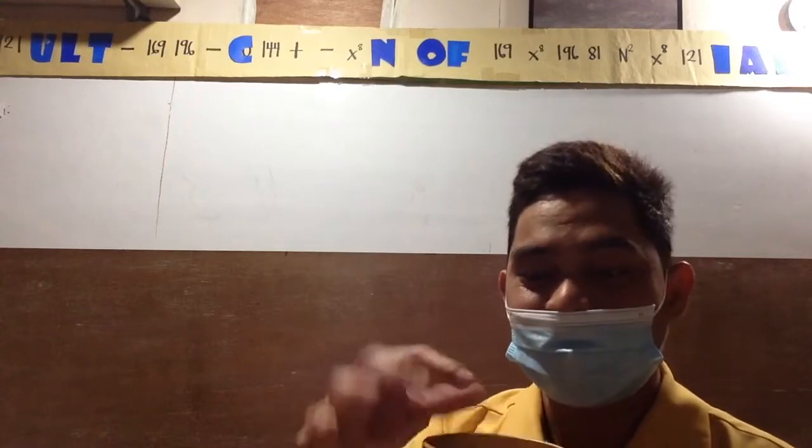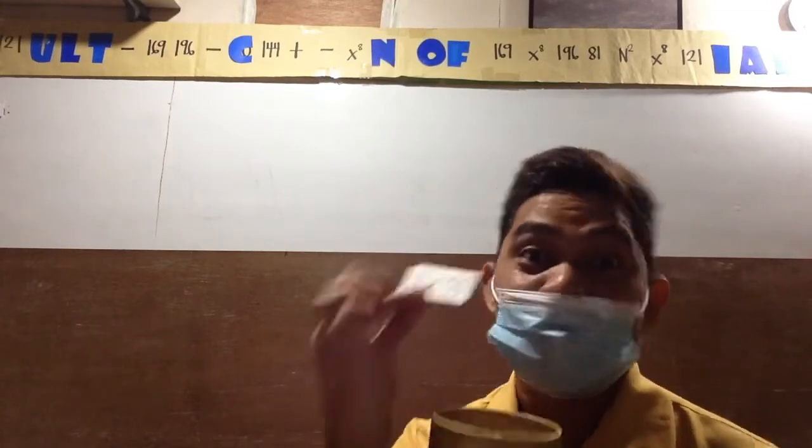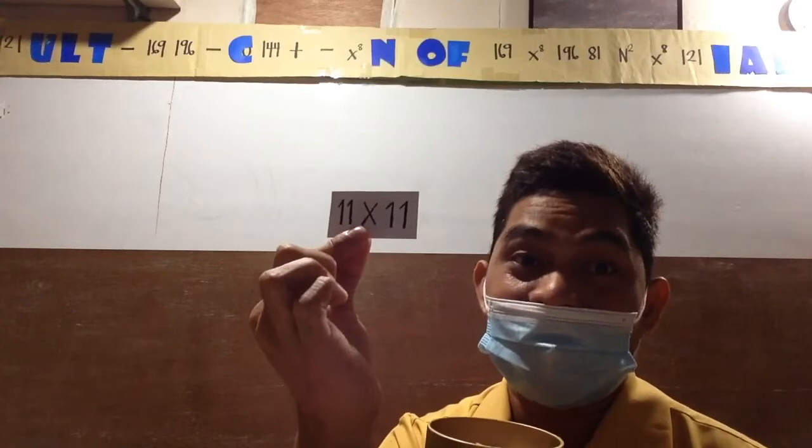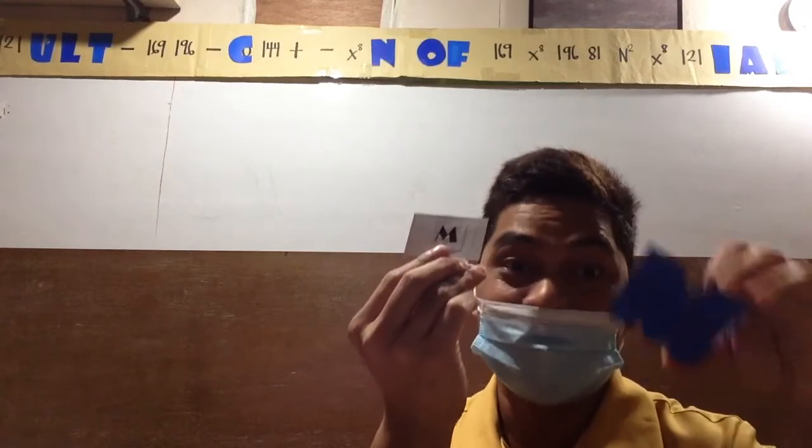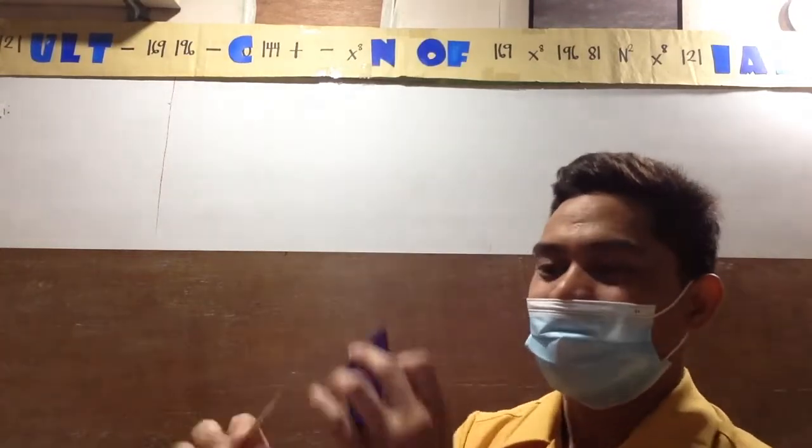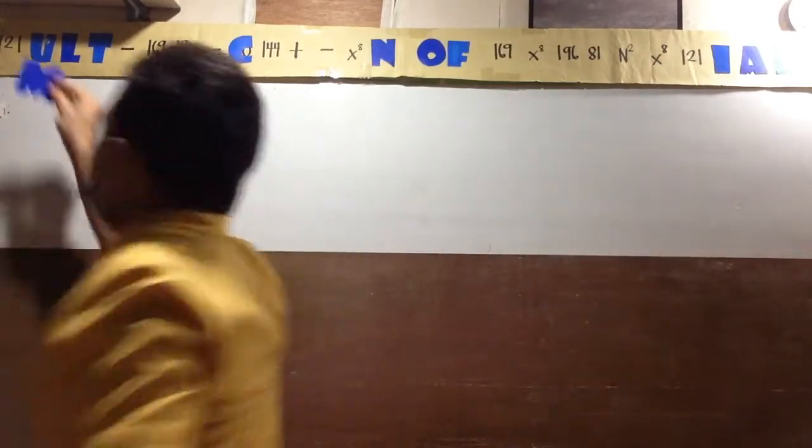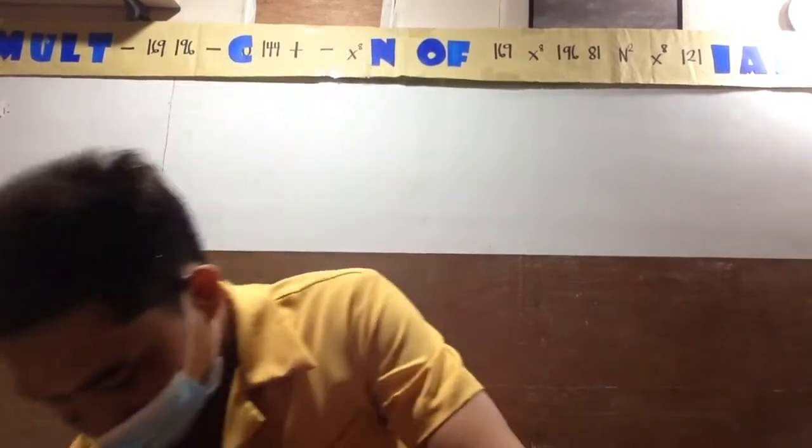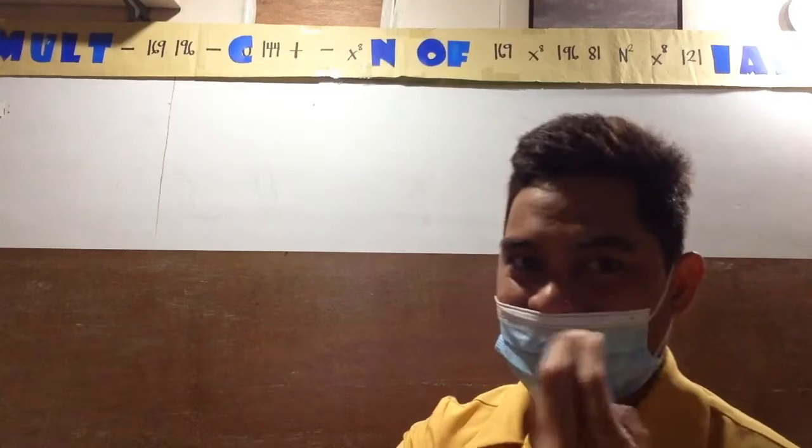But before that, let's have a game first entitled Guess What. You are going to decode the missing word by answering this mathematical problem that I have here on the box. Just pick one. Then 11 times 11 is 121. You can see there is a letter at the back, and you'll find it on the chart. So M, we'll place it here. Any volunteer?